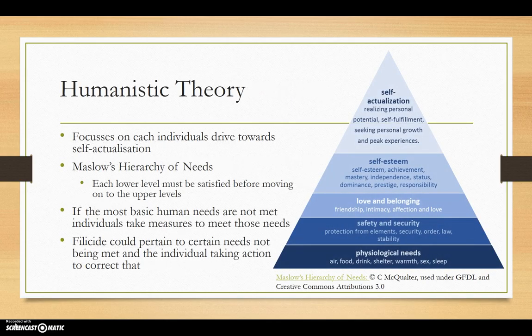The humanistic theory focuses on each individual's innate desire to reach self-actualisation. Maslow's hierarchy of needs requires each of the lower needs to be met before moving on to the next level of the hierarchy.